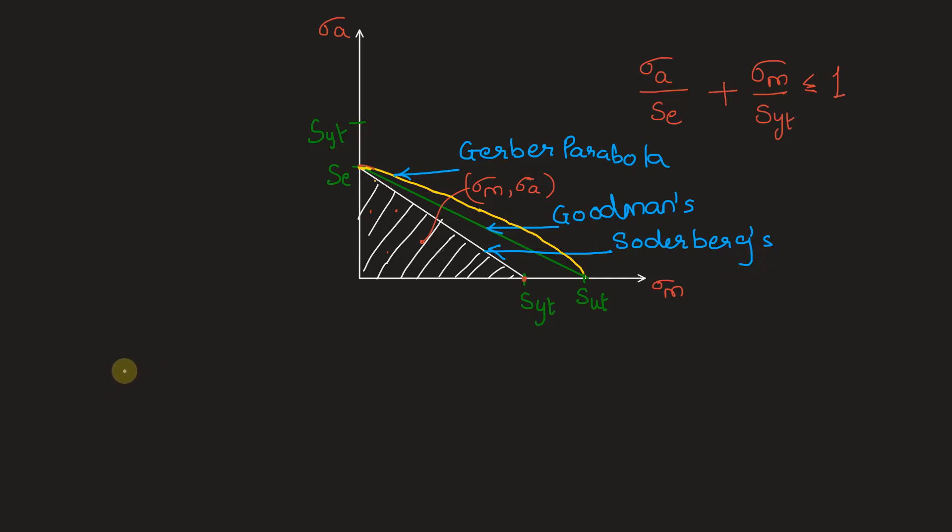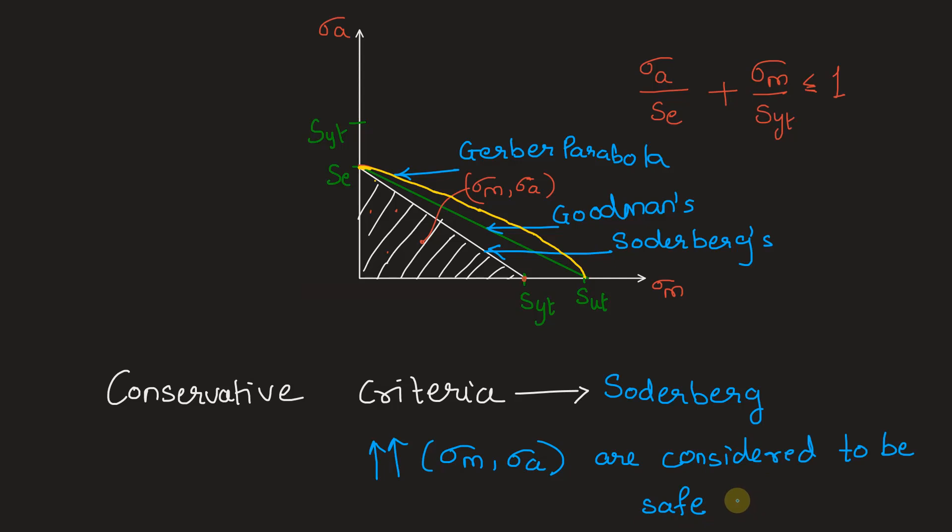The most conservative criteria is given by Soderberg because combinations of sigma M and sigma A - even higher than Soderberg's equation - are considered safe in other criteria. Higher combinations of sigma M and sigma A are considered safe against failure in all other criterion, or all three criteria other than the Soderberg criteria.